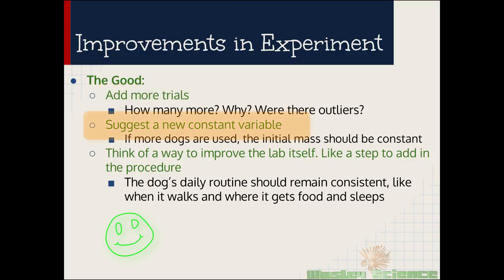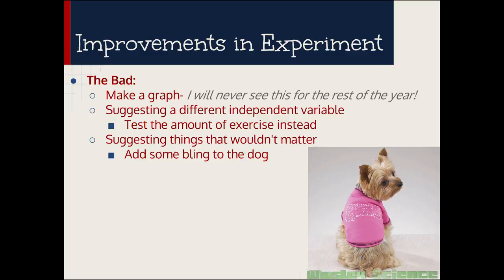The second thing you should do for an improvement is suggest some sort of new constant variable. So one of those three constant variables, add a fourth one. If more dogs are used, the initial mass should be constant. Think of a way to improve the lab itself, like a step to add in the procedure. Maybe your procedure wasn't as repeatable as it could be. And I have here that the dog's daily routine should remain consistent, like when it walks and where it goes to get food and sleep. Here's the bad.